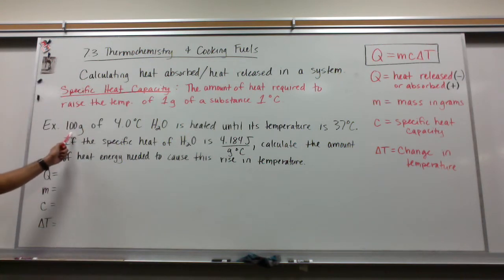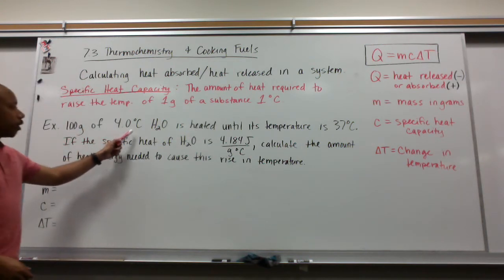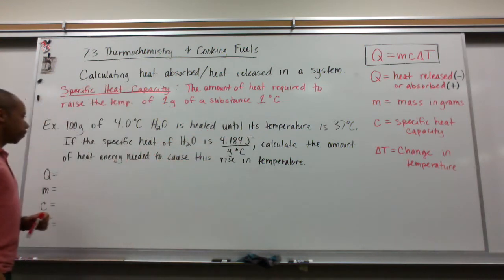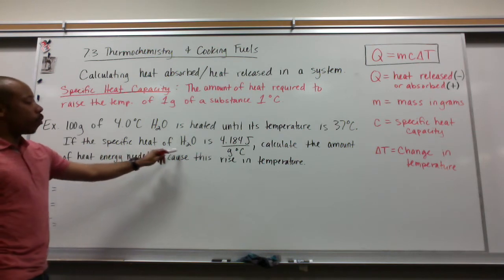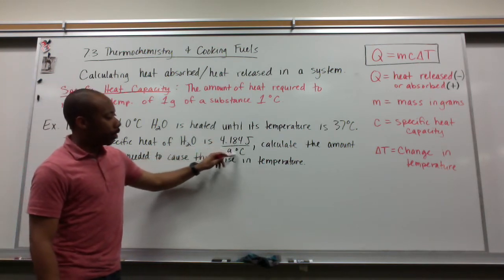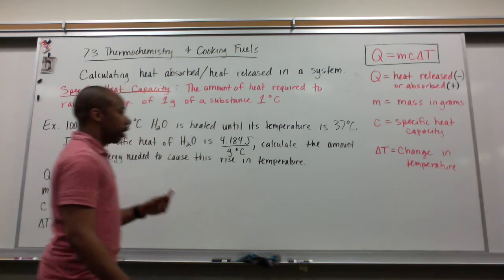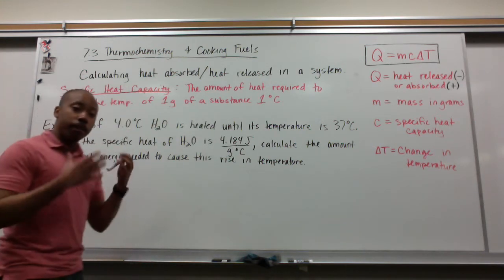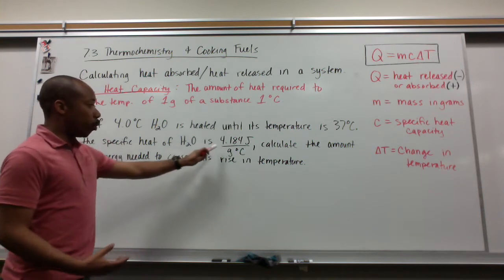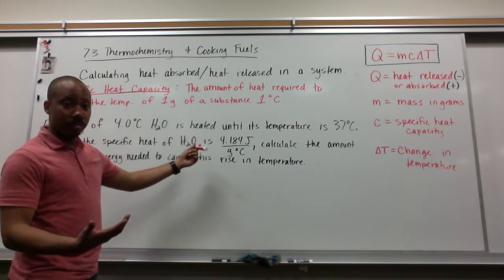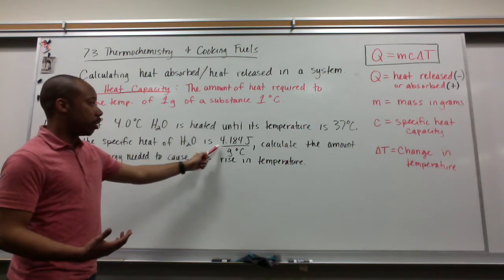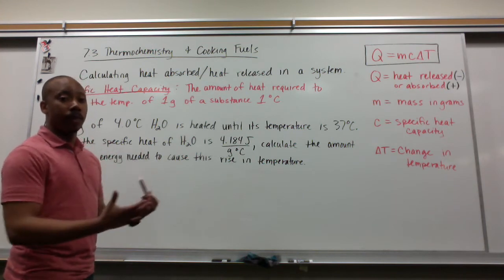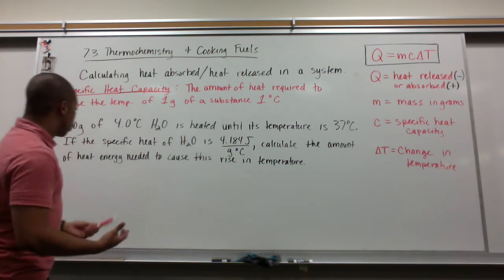So, here's an example problem. 100 grams of 4 degree Celsius water is heated until its temperature is 37 degrees Celsius. If the specific heat of water is 4.184 joules per gram degree Celsius, calculate the amount of heat energy needed to cause this rise in temperature. Note that every different substance has its own specific heat capacity.